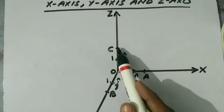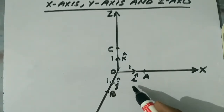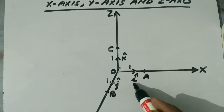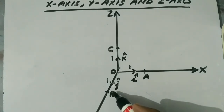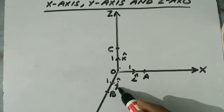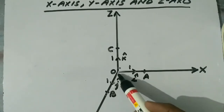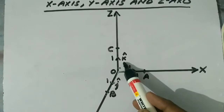Similarly, on z-axis, OC is a vector whose length is one unit. The unit vector along x-axis is denoted by i-cap, the unit vector along y-axis is denoted by j-cap, and the unit vector along z-axis is denoted by k-cap.